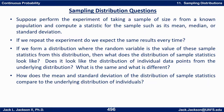We're going to take this experiment. Suppose we perform the experiment of taking a sample of size n from a known population and compute a statistic for the sample, such as its mean, median, or maybe standard deviation. If we repeat the experiment, do we expect the same results every time? Do we expect them to be exactly the same as the population results — the population parameters?